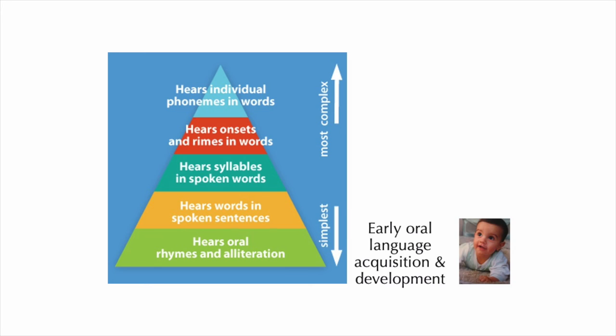The earliest and simplest skill in phonological awareness is hearing oral rhymes and alliteration. This occurs early on in the child's language acquisition and development.